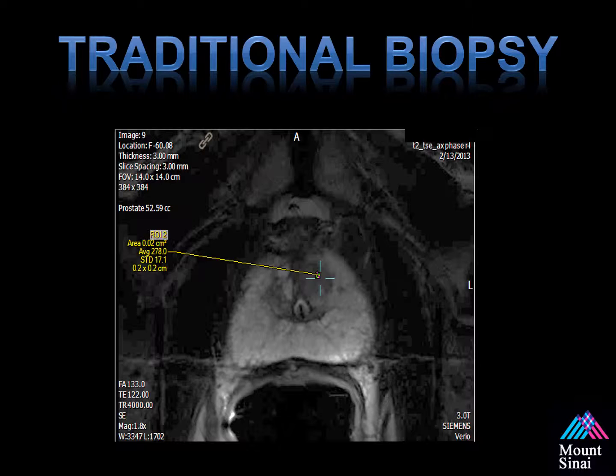What's the reason for two prior negative 12-core biopsies? The needles don't typically reach the anterior portion of the prostate or the top of the prostate, away from the rectum.